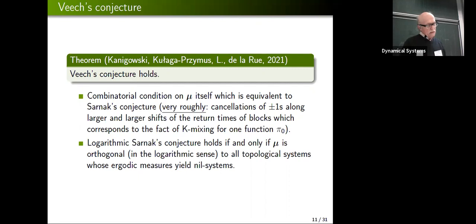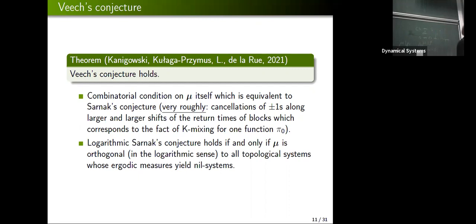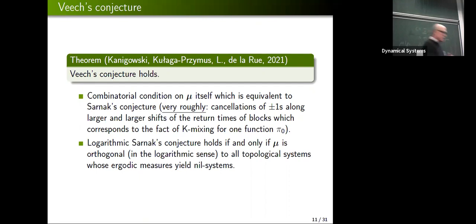Now that Sarnak's conjecture is a theorem, it has consequences. One consequence is that we can formulate the next conjecture purely on a combinatorial level: we come back to the Möbius function and write what is the property of the Möbius function. All these Chowla conjecture, prime number theorem, Riemann hypothesis ideas are about cancellations of plus and minus ones — nothing more than that. Sarnak's conjecture turns out to be a weaker condition than Chowla, where you want to see an independent process; these cancellations should occur along return times of blocks.